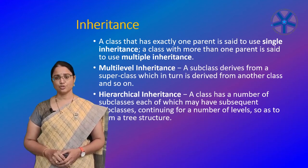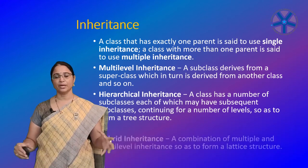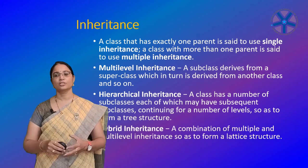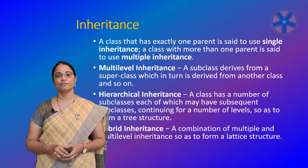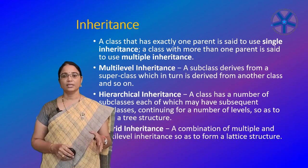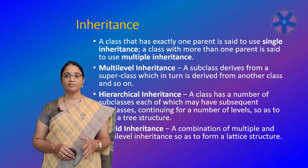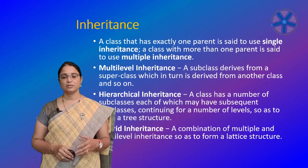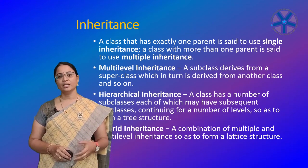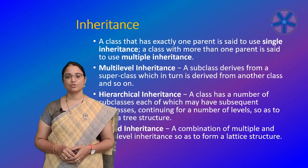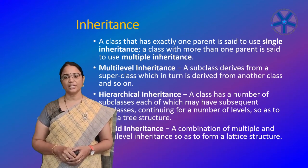Hierarchical inheritance means a class has a number of subclasses, each of which may have subsequent subclasses, continuing for a number of levels to form a tree structure. Hybrid inheritance is a combination of multiple and multi-level inheritance, forming a lattice structure.